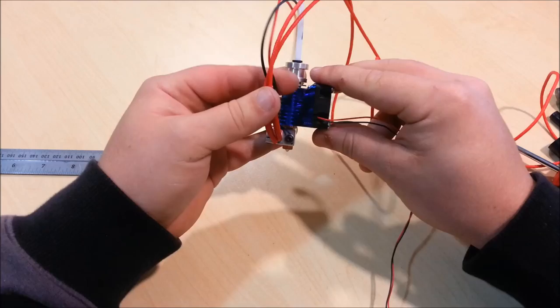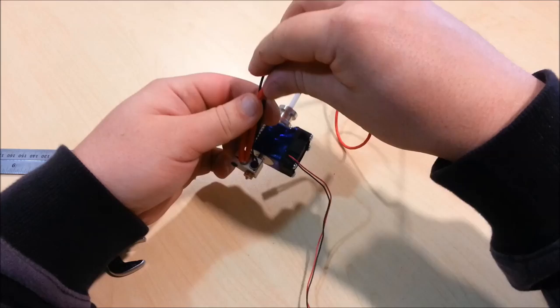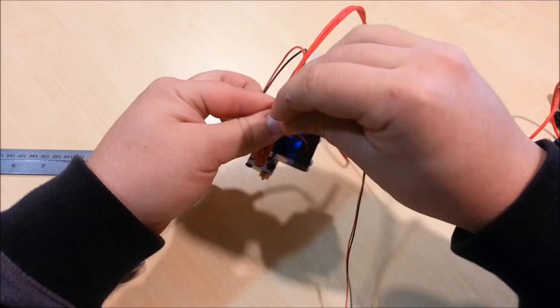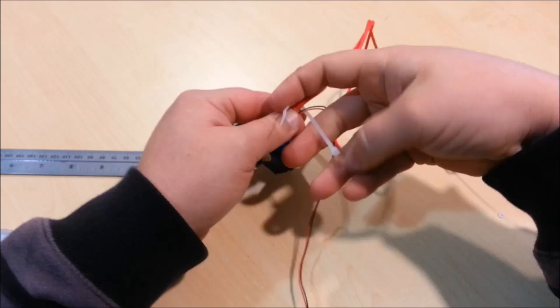Now take your thermistor cables and this fan cable over here and the included zip tie. Slip it around them. Tighten as shown. And you're done.